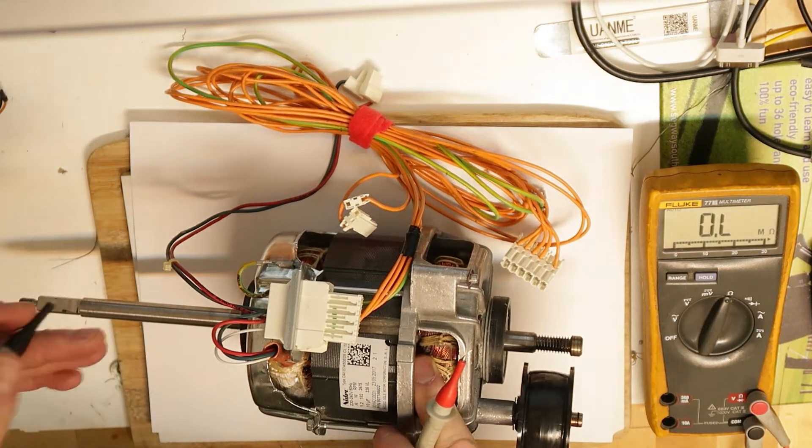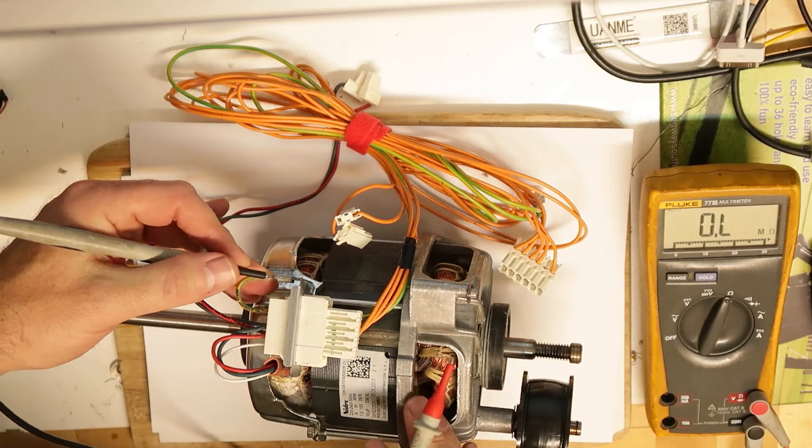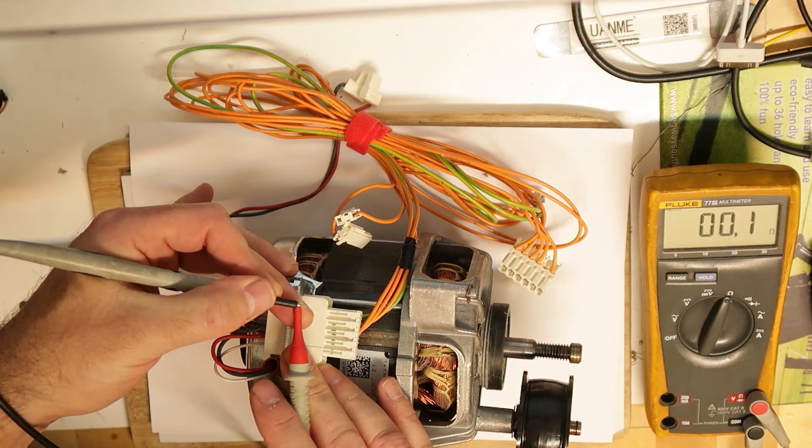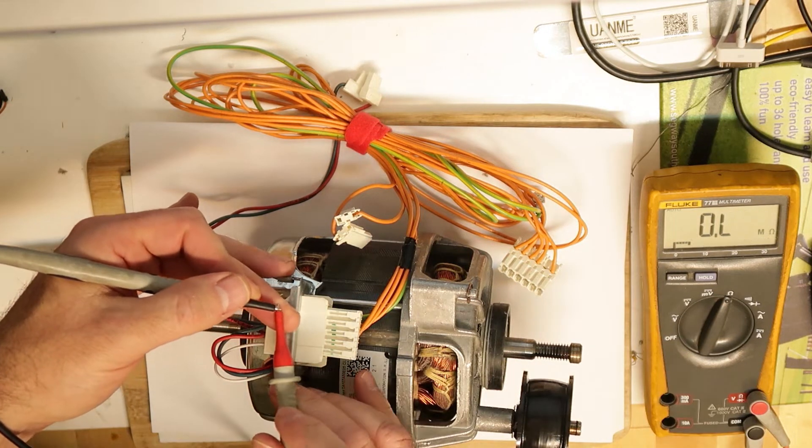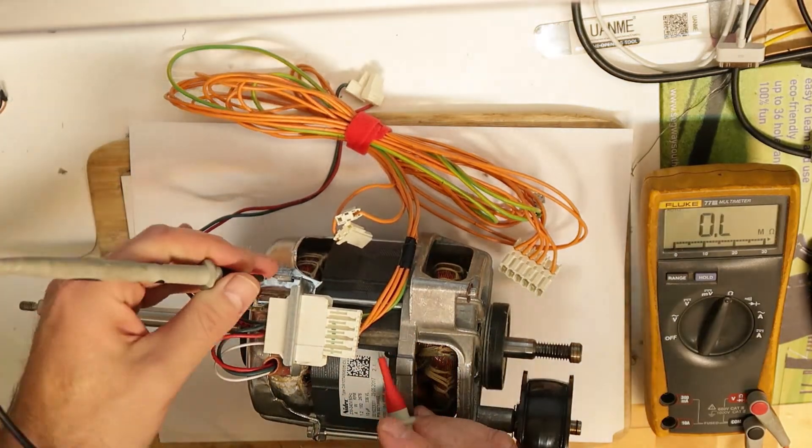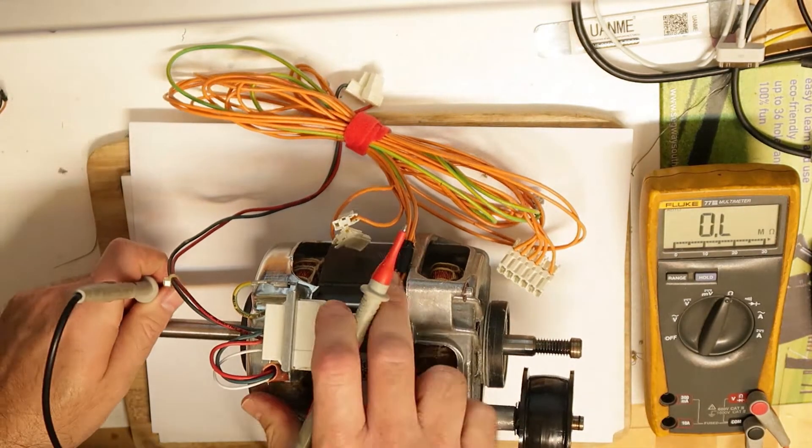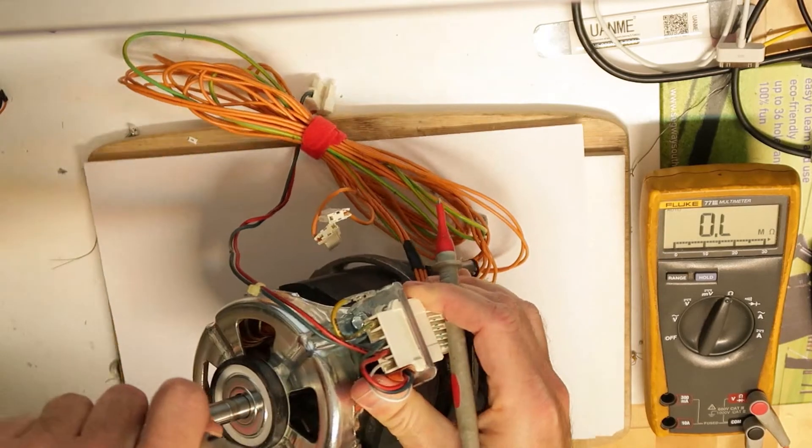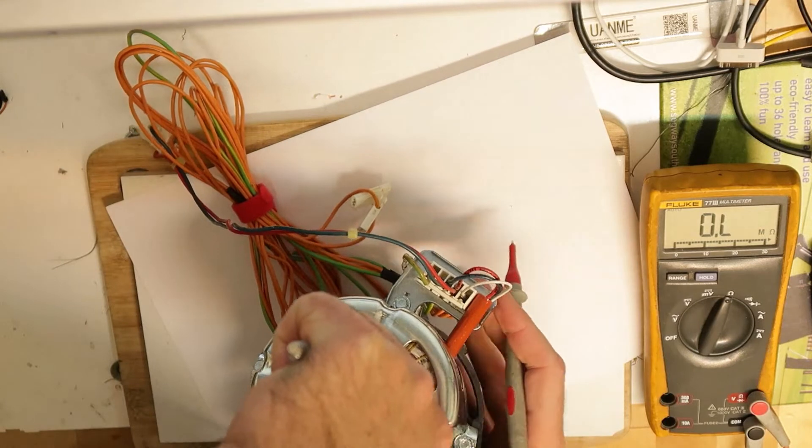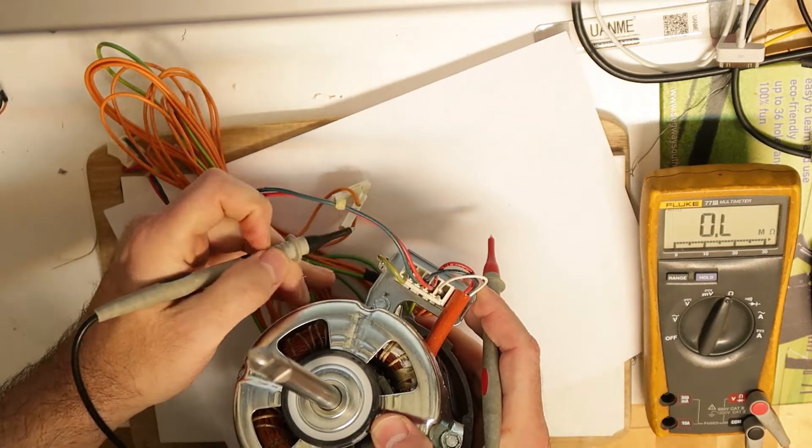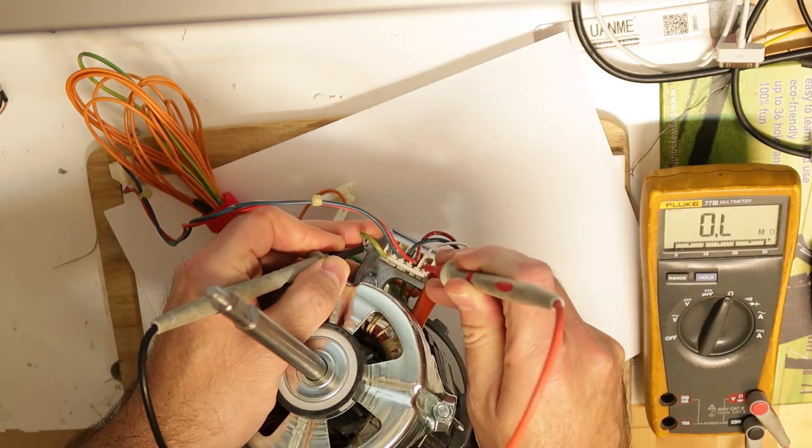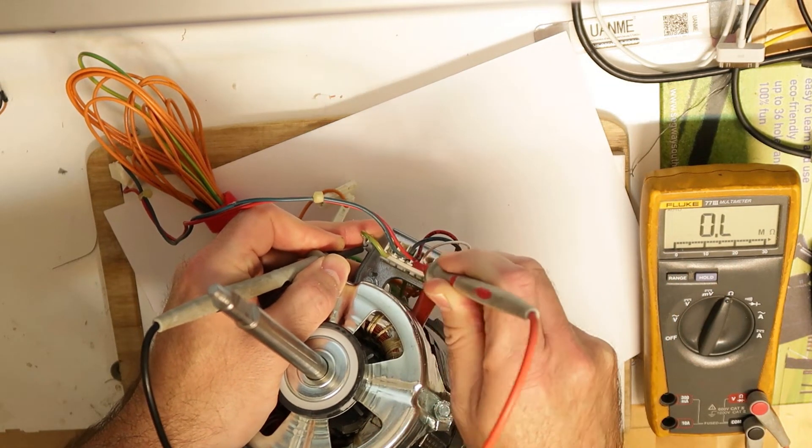This is the first thing. Of course, first check that my meter is okay - it is okay when I am shorting the probes. Now I will go from the ground to the coils. There are connections to the coils here.